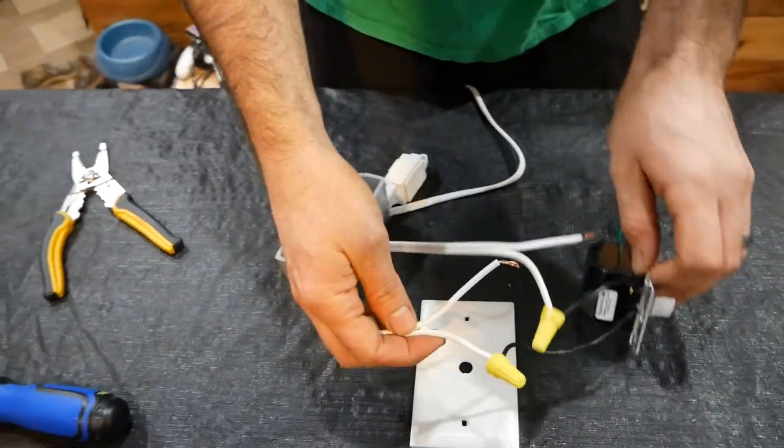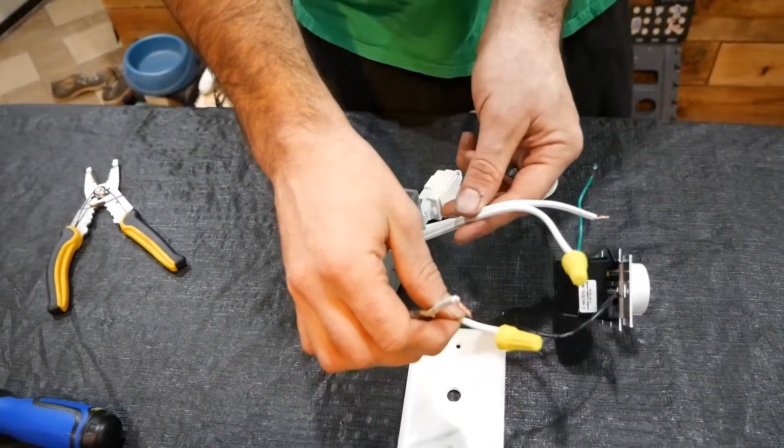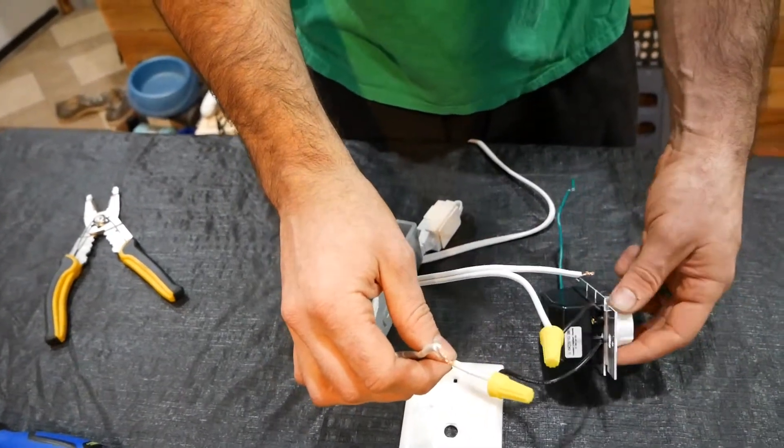So it doesn't matter which wire goes where, as long as you have one wire from your male end and one wire from your female end connecting to the switch. What that does is it breaks the current, or regulates it in this case.